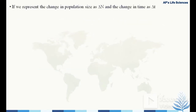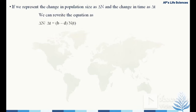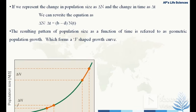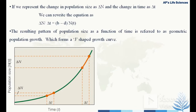Representing the change in population size as ΔN and the change in time as Δt, we rewrite the equation as ΔN/Δt = (b − d)·Nt. The resulting pattern of population size as a function of time is referred to as geometric population growth, which forms a J-shaped population growth curve.